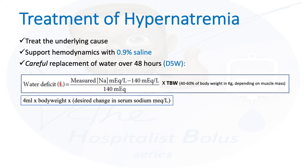The first equation is the water deficit. For example, if the current sodium is 150 and you want to get it to 140, you take 150 minus 140, divide by 140, then multiply by total body water — normally 60%, but can be 50% or even 40% in obese patients, depending on muscle mass.